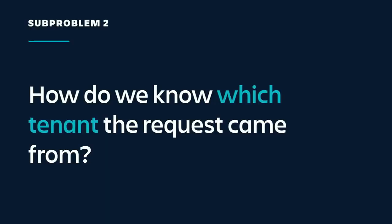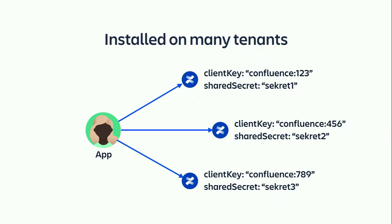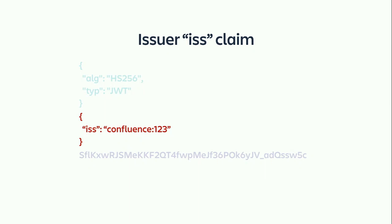How do we know which shared secret to use to verify an incoming request or to generate one? We need to know the tenant that sent the information. Our app can be installed on many different tenants, each with a different unique client key and a different associated shared secret. So it's easy — we put that information into the JSON payload of our JWT token. We'll use the standard issuer claim, ISS, which is defined in the JWT spec, to identify who it came from — in this case, the client key of the product or your application's unique app key. Once we have that information, we can retrieve the shared secret and use it to verify the signature or generate our own.